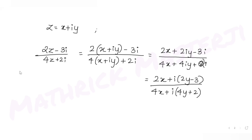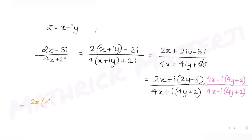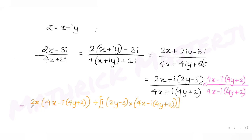To simplify, I multiply both numerator and denominator by the conjugate of the denominator, which is 4x minus i(4y plus 2). The denominator becomes a squared minus b squared form: (4x) squared plus (4y plus 2) squared, since i squared equals minus 1 so the minus signs cancel to give a positive.